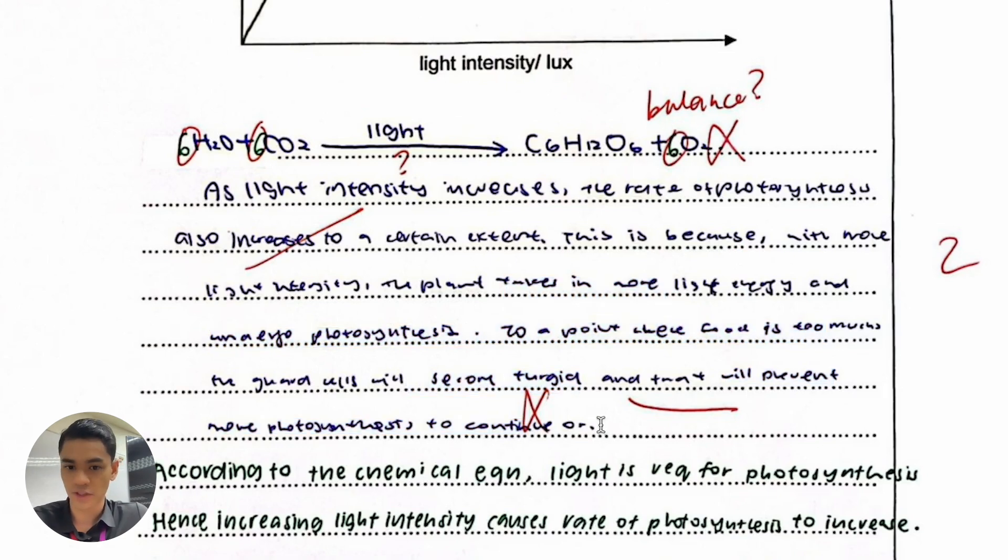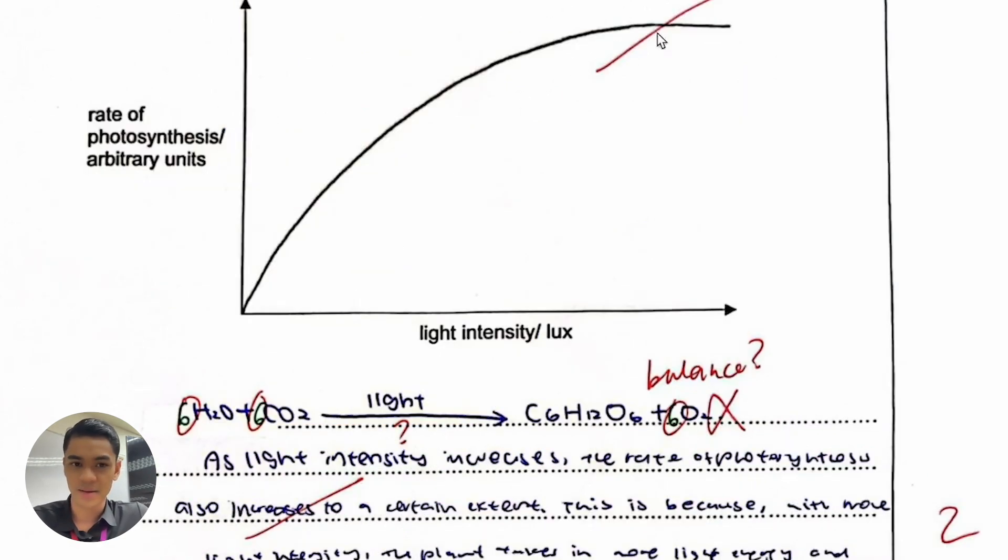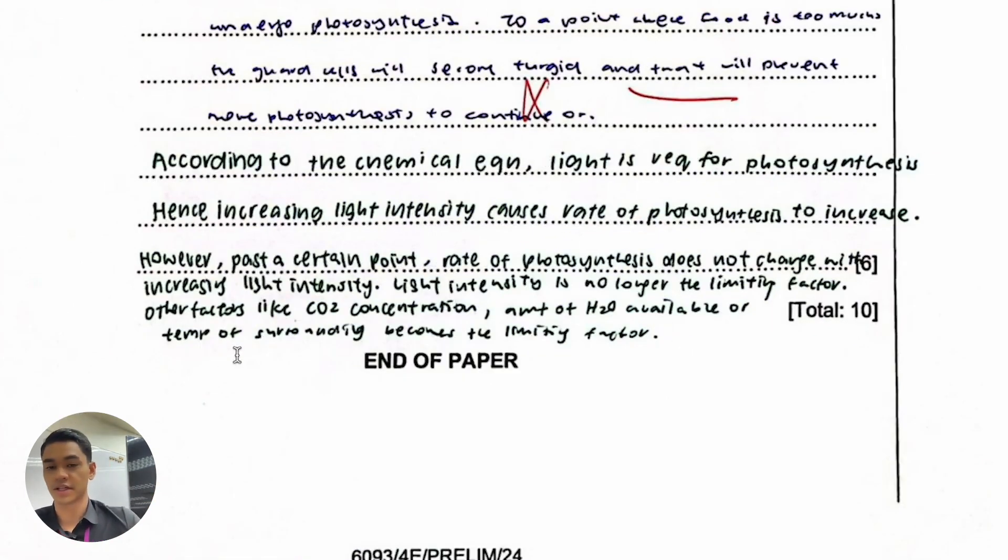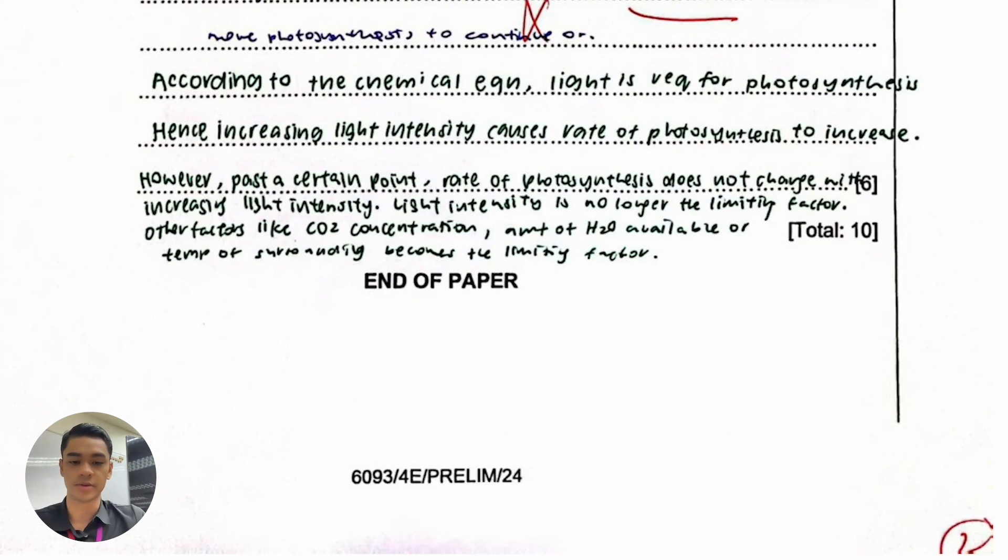But then at very high light intensity it's no longer a limiting factor. So this thing is what the question is asking, this whole thing. I think it's just a content question because you did realize that it does taper, you did realize there's a like, it only works to a certain extent then it no longer increases the rate. So I think it's just a content question that you didn't realize you need to pull that in.